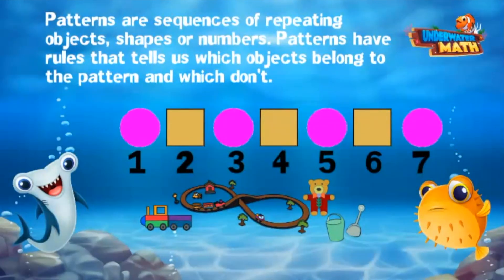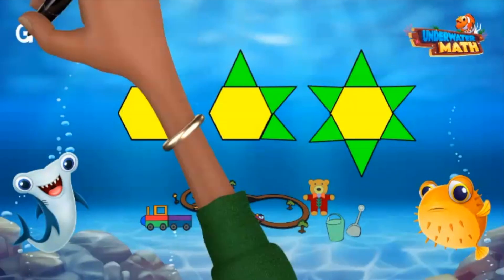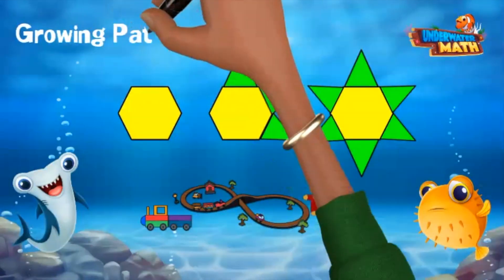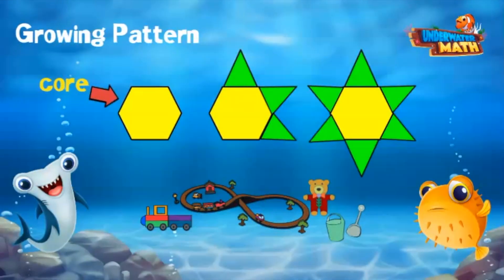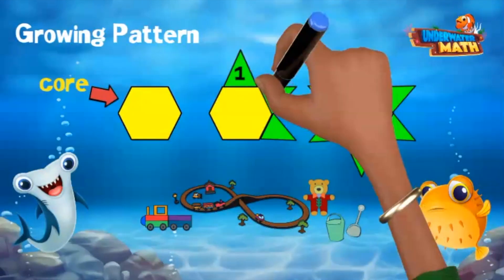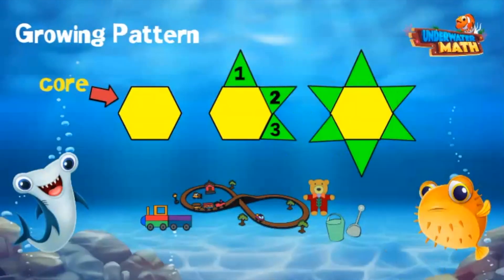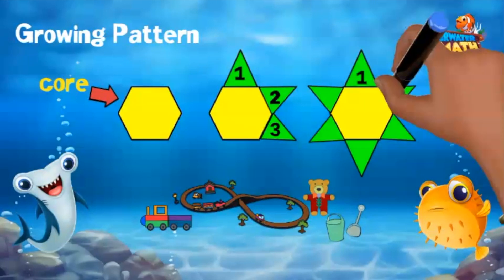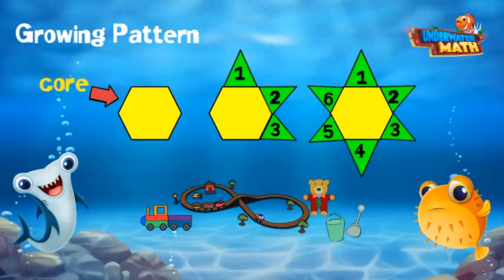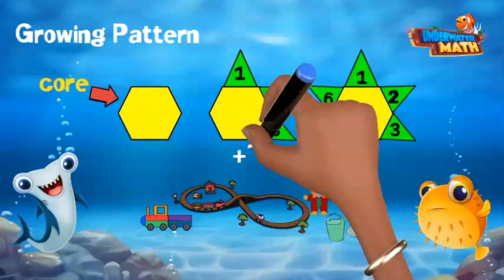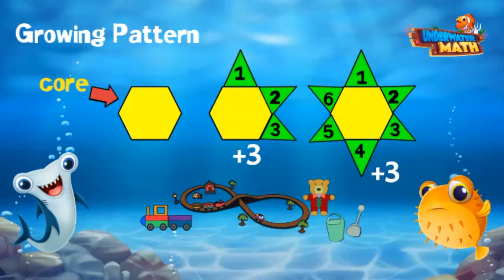Let's look at another pattern I made. This one is a growing pattern. We start with the core, a yellow hexagon. Then I added three triangles to the core for figure two. I added another three triangles to the core for figure three, totaling six triangles. So the rule is add three triangles.